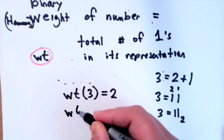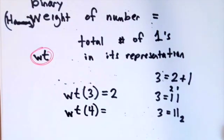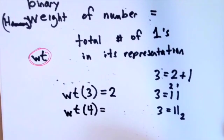What would the binary or the Hamming weight of four be? It would be one with the powers of two like one, two, four.